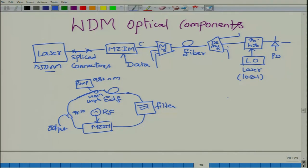For example, we might be working with channel 31 along with additional channels like channel 41 and channel 12, all simultaneously transmitted in this three-channel system from one location to another. These different data streams modulated on different central wavelengths or central frequencies are then multiplexed and transmitted on the fiber. Of course there are amplifiers, filters, and other elements for long-distance transmission, but we will ignore those for now.